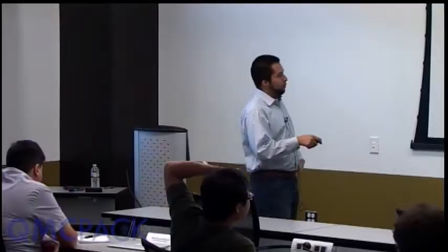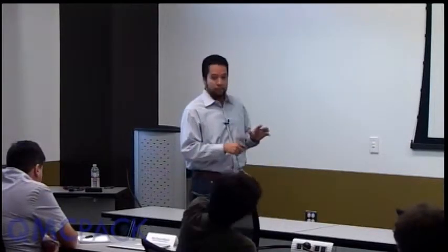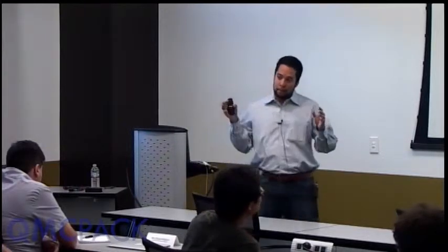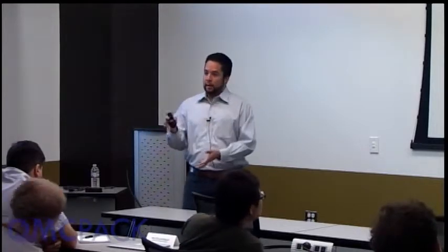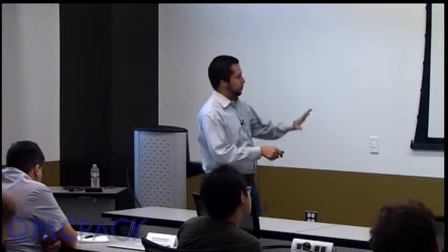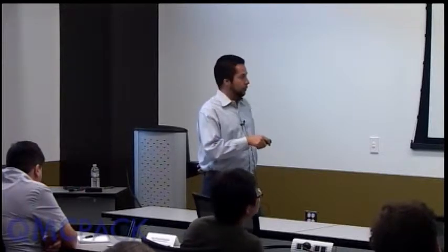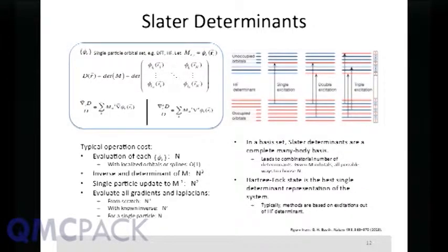The number of possible Slater determinants is combinatorial — how many ways you can put N things in M choices — which leads to an exponentially large number, and this is the big problem of CI calculations. We have single excitations, double excitations, and so on: you take one, two, or some number of electrons from the occupied state and put them in the virtual. Counting how many times you excite gives you the notation.